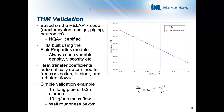RELAP7 is NQA-1 certified — the highest level of quality certification for software. A simple validation example shows a pressure drop comparison: the Darcy-Weisbach equation (orange dots) versus the pressure drop predicted by THM for a one-meter-long pipe with a 2.2-meter diameter, flowing 10 kilograms per second with a wall roughness of about 5e-5. We get a really good match with analytical solutions across all fluids and across all pressure and flow ranges.